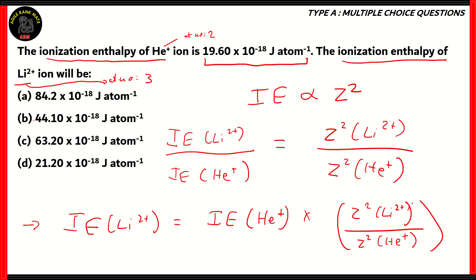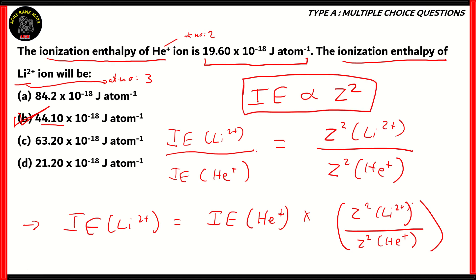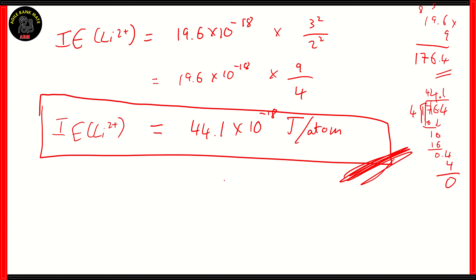If we look at the options, it is clear that option B, 44.1, is the correct answer as per the calculations. The idea here is to relate ionization enthalpy with the atomic number — ionization enthalpy is related to the square of the atomic number. Find the ratio between the two ionization enthalpies, then use that to identify the ionization enthalpy of lithium 2 plus, which is 44.1 × 10⁻¹⁸ joules per atom, aka option B.